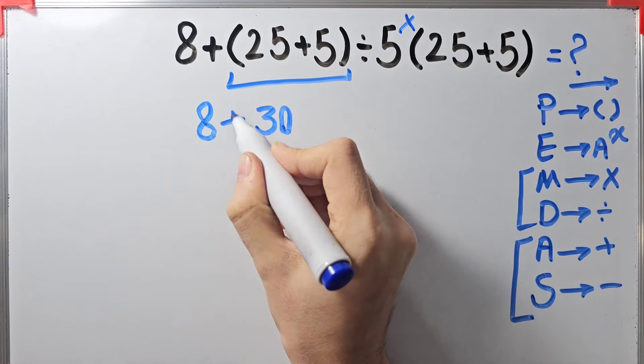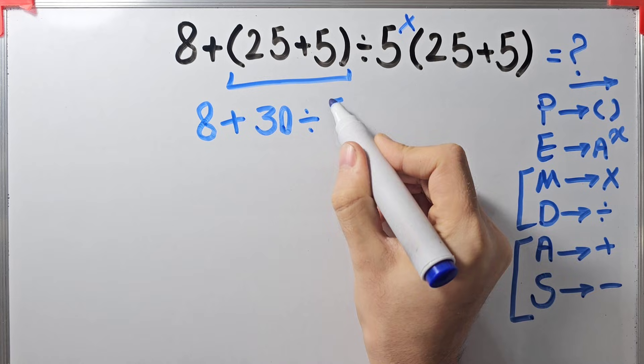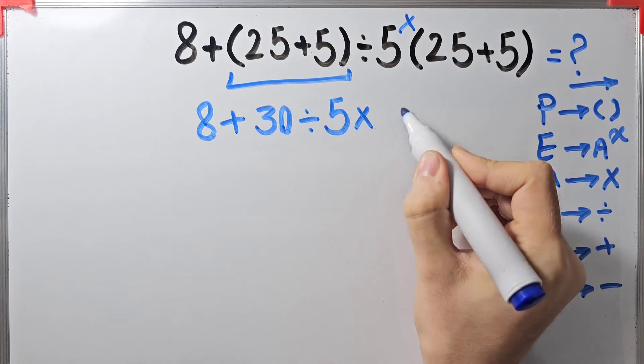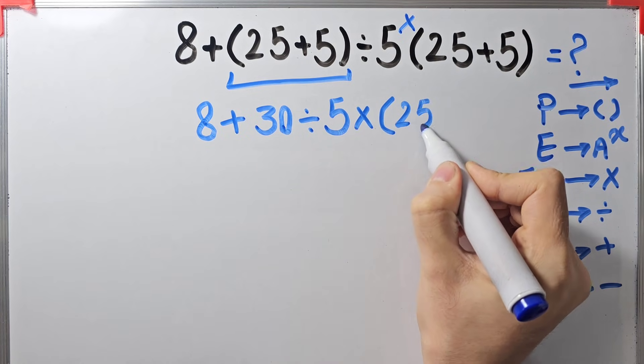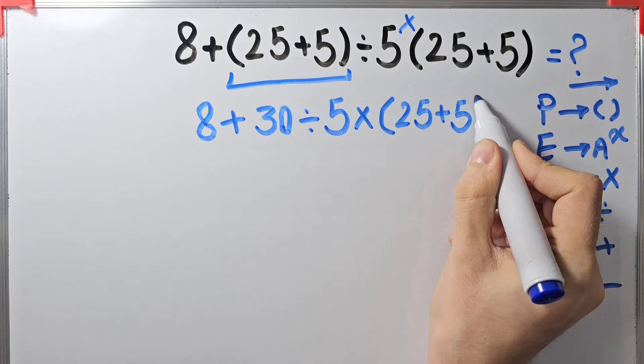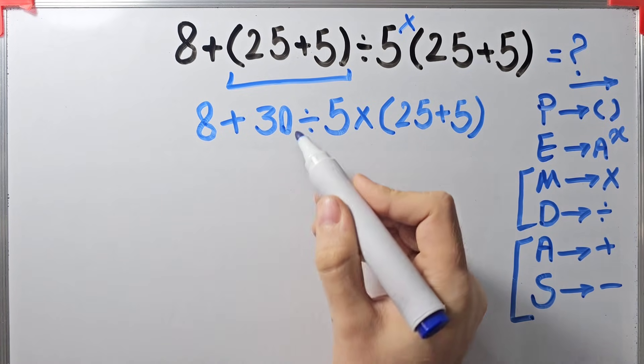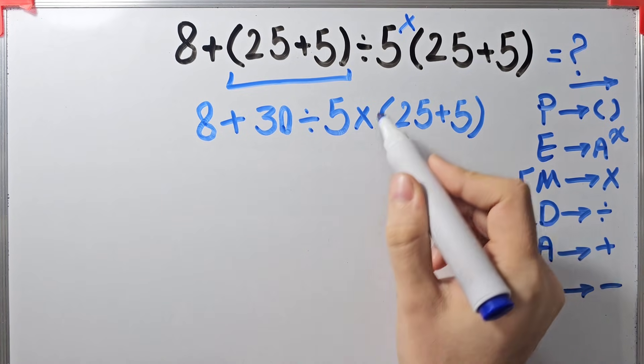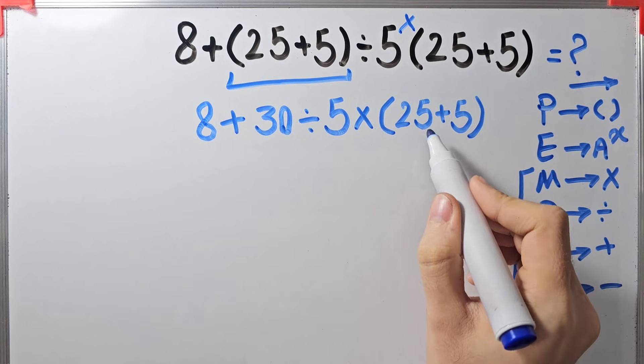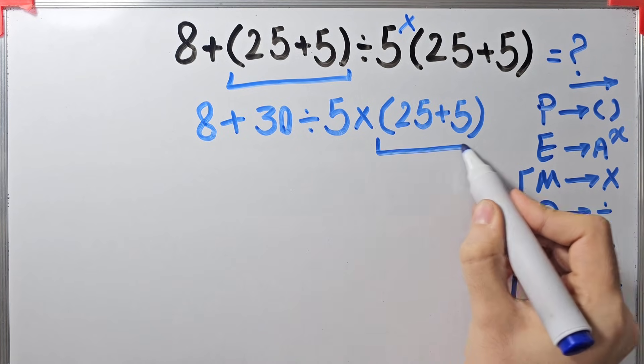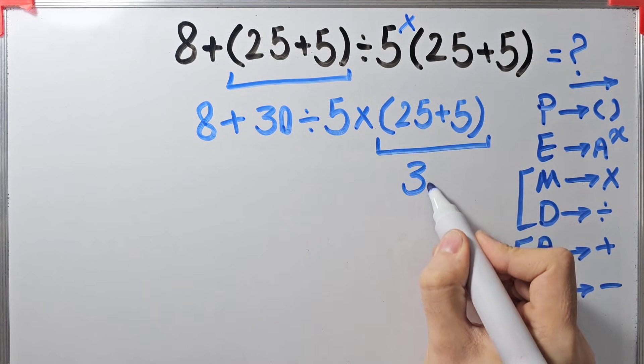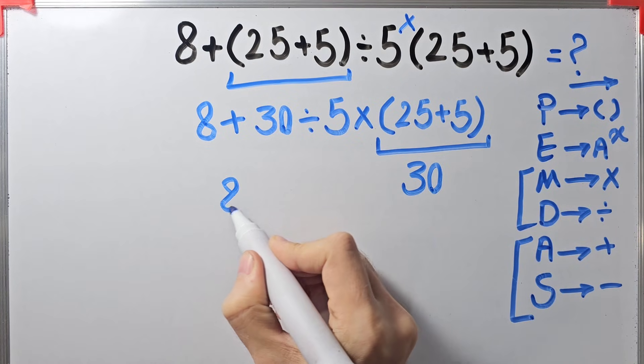Okay guys, now we have addition, division, multiplication, and parenthesis. Again we simplify this parenthesis. 25 plus 5 equals 30. Now the question is 8 plus 30 divided by 5, then times 30.